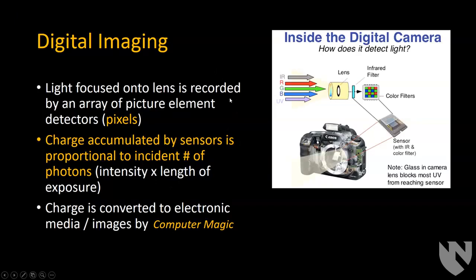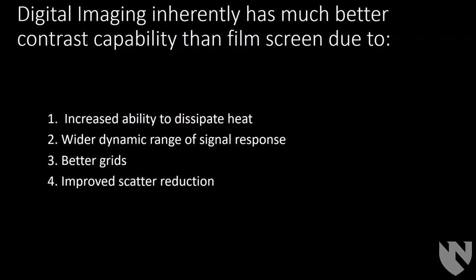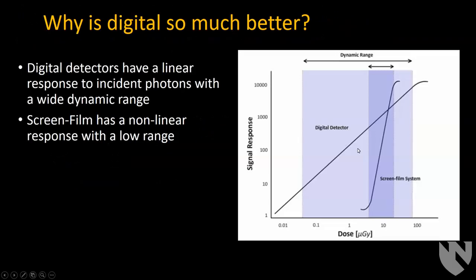Digital imaging has better contrast because it has a wider dynamic range of signal response. With a film system, too low a dose makes everything look white, too high makes everything look black, and only a thin range of radiation exposure creates shades of gray. Whereas with a digital detector, you can have very low or very high dose and still produce differences in shades of gray. After the fact, you can adjust the image to make it look nice.